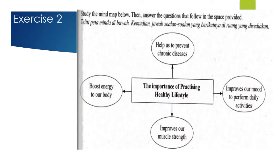This is exercise 2 — almost the same thing. Study the mind map below, then answer the questions that follow in the space provided. The previous exercise was about how to avoid being a bully victim — that was factual, meaning facts, not a story. Now, the topic is the importance of practicing a healthy lifestyle. It also has four points, but we don't want to take all four — we only need three. This time, it does not give us any supporting details, so you have to think of your own supporting details from the points given.